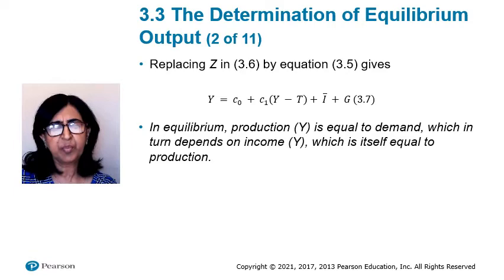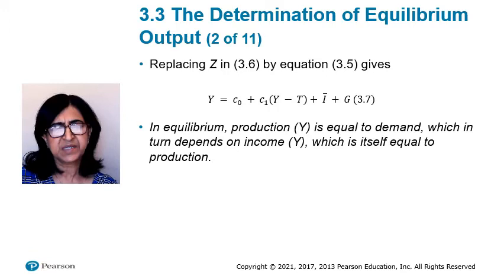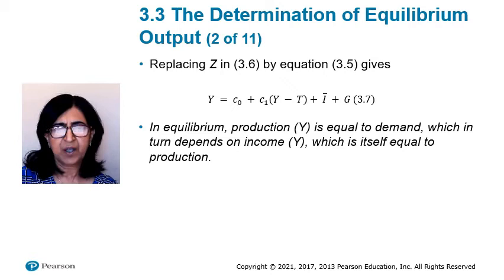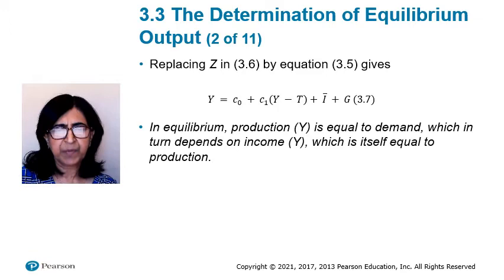Substituting equation 3.5 into equation 3.6 gives equation 3.7: Y equals c0 plus c1 times (Y minus T) plus I-bar plus G. In equilibrium, production Y equals demand Z, which in turn depends on income Y, which is itself equal to production. We use the same symbol Y for production and income — this is no accident. As shown in Chapter 2, we can look at GDP from either the production side or the income side; production and income are identically equal.